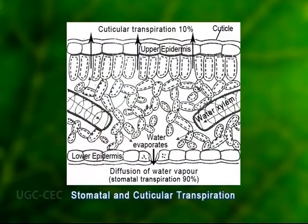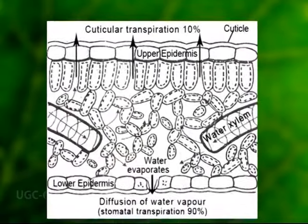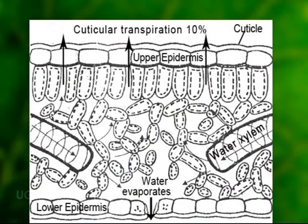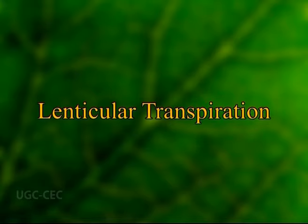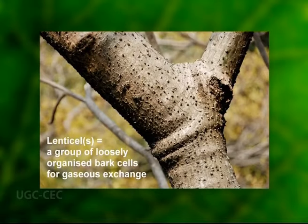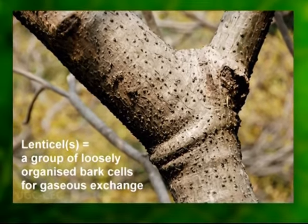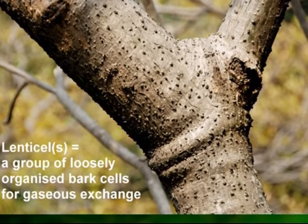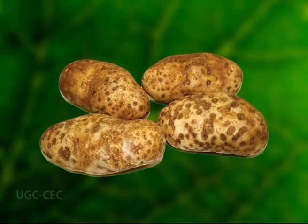Number two: cuticular transpiration. The epidermal cells are mostly cutinised, with cutin impregnated in the outer cellulosic cell wall. Some transpiration, approximately up to 10 percent, takes place by direct evaporation of water from the outer walls of epidermal cells. Number three: lenticular transpiration — water loss through lenticel cells found in woody stems and fruits, constituting about 1 to 2 percent of total water loss through transpiration.